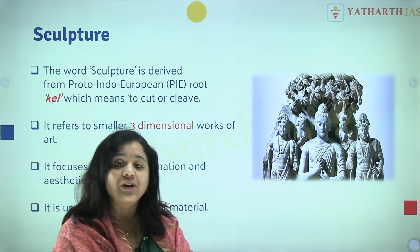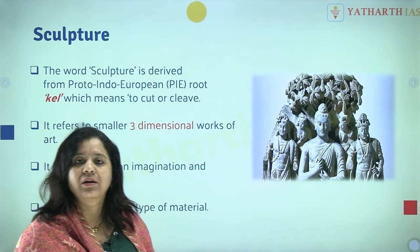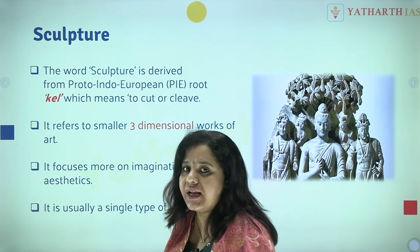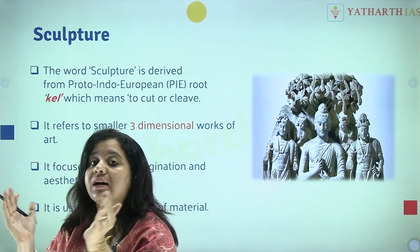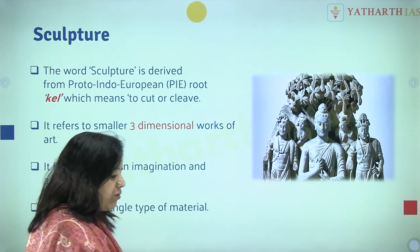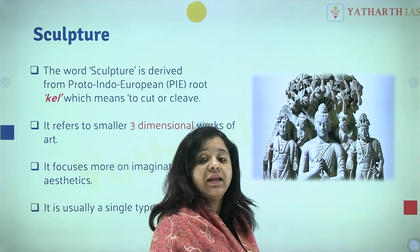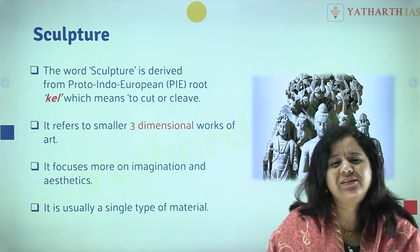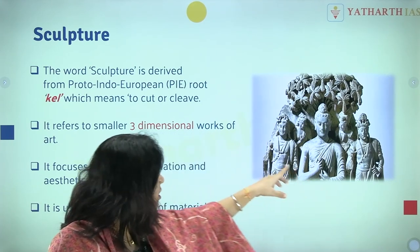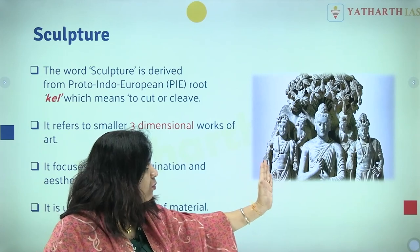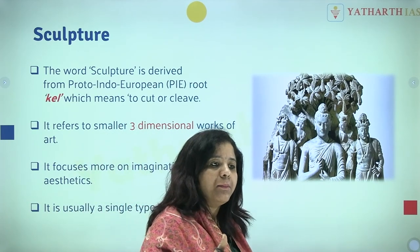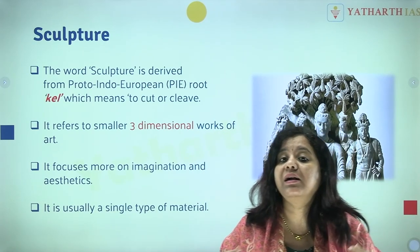Aesthetics involves the clothes we wear, the earrings, the jewelry, the makeup — all these are aesthetics. In sculpture you use your creativity, imagination, and aesthetics to build a 3D work. It usually uses a single type of material, though there are various examples where two different materials were used in one sculpture.